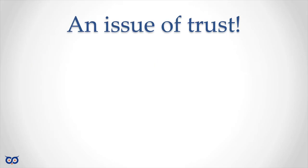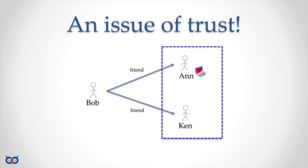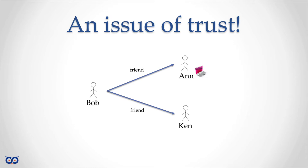If you remember, we started talking about the issue of trust back in episode 8 or so. We described a scenario with Bob, Ann, and Ken. Bob is friends with Ann and Ken, but Ken and Ann don't know each other. Ann has a laptop she'd like to give to Bob, but she's not close to Bob — she's close to Ken. She wants Ken to deliver it, but she needs Ken to prove he's the right Ken — the one with their mutual friend Bob.